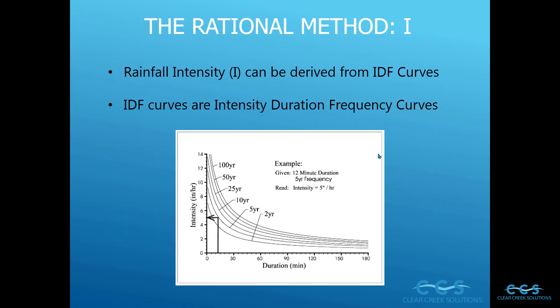Rainfall intensity I can also be derived from IDF curves. IDF curves are intensity-duration-frequency curves, which have intensity in inches per hour on the y-axis, duration in minutes on the x-axis, and different storm frequencies shown — the 100-year storm, 50-year storm, 25-year storm, etc.